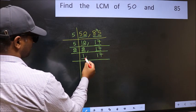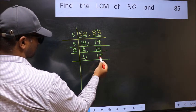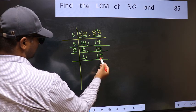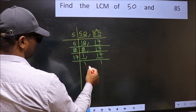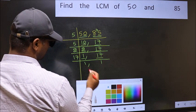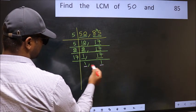Now we got 1 here. So focus on the next number, 17. 17 is a prime number, so 17, 1, 17. So we got 1 in both the places.